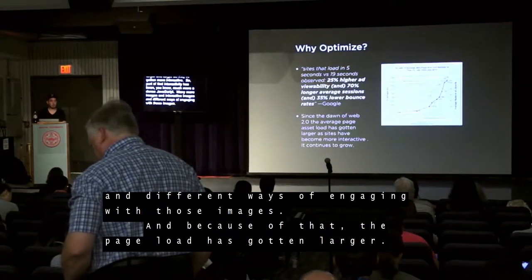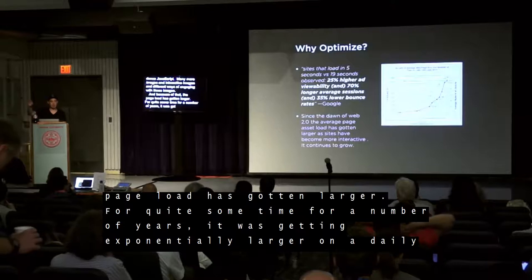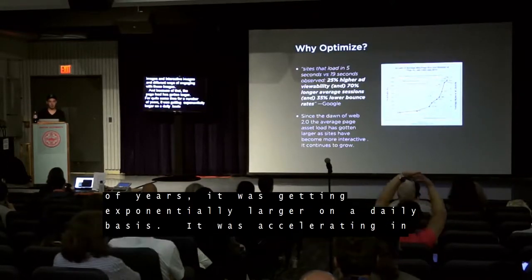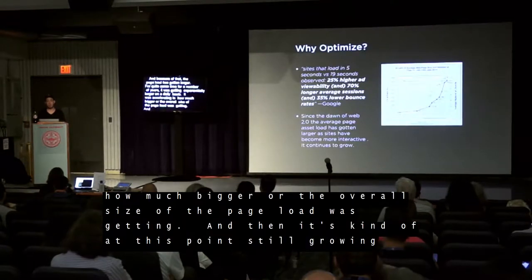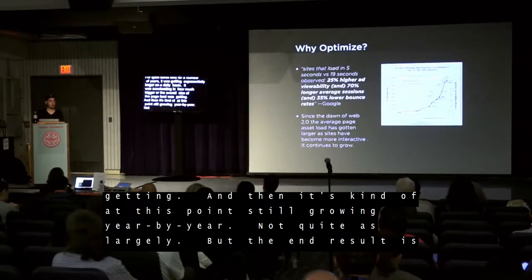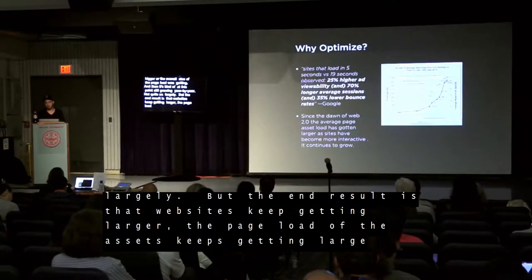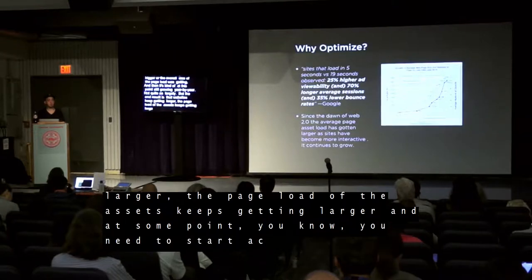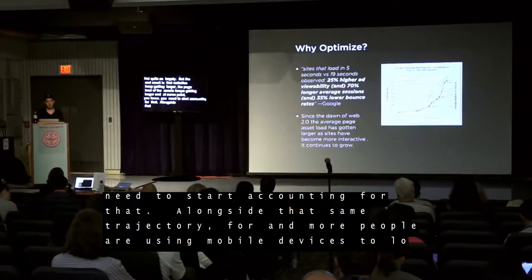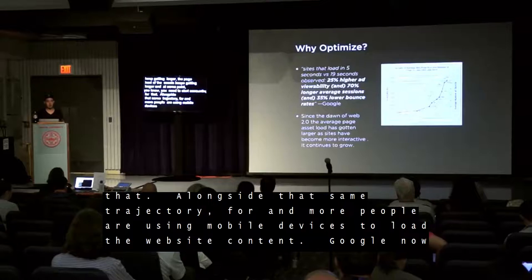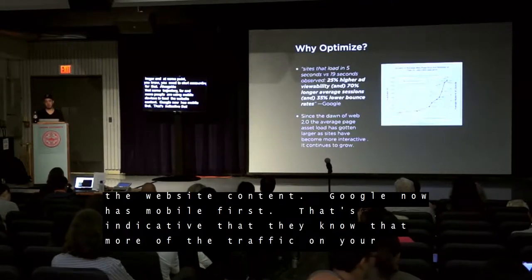Because of that, the page load has gotten larger. For quite some time it was getting exponentially larger on a yearly basis — accelerating in how much bigger the overall size of the page load was getting. It's still growing year by year. Websites keep getting larger and the page load of the assets keeps getting larger. Alongside that, more and more people have been using mobile devices to load web page content. Google now indexes mobile first, indicative of the fact that more of your traffic is coming from mobile devices than desktop computers.